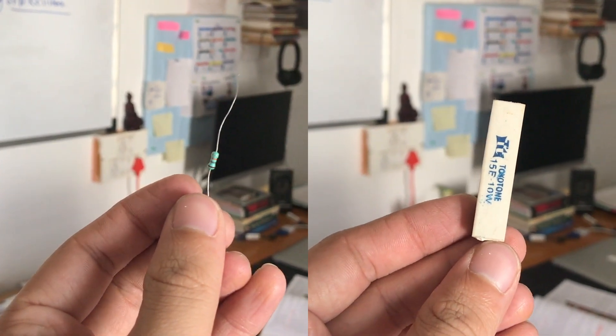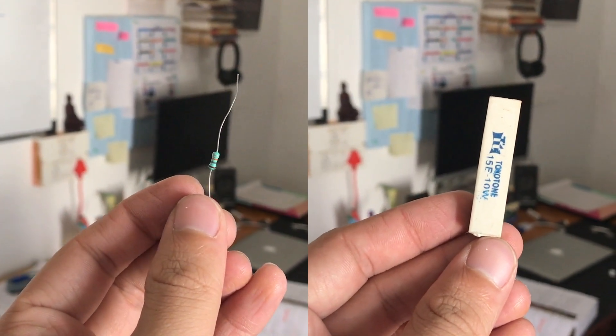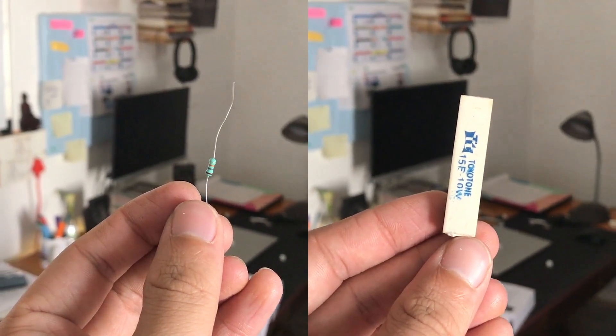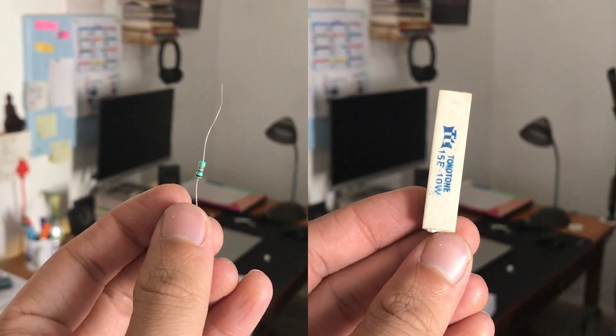In general, and you can use this as a thumb rule also, the greater the physical size of a resistor, the greater is the power rating and vice versa.